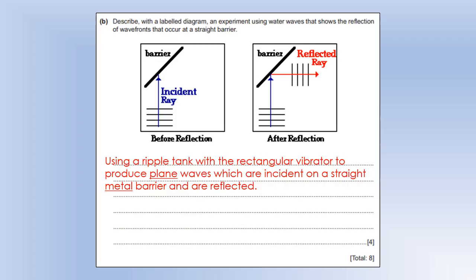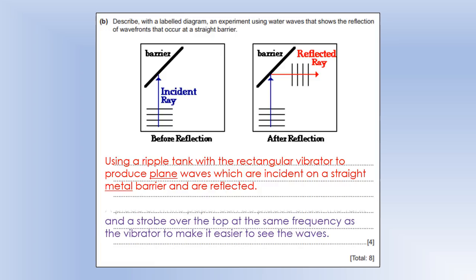And we'll have those incident on a straight, we usually use a metal barrier. We might use a wooden one, I guess, but metal is commonly used. And we can see the reflected waves. So how would we actually see this experiment? Well, we do two things to help us view it. We put a piece of white paper under the ripple tank, which is typically see-through. That helps us see it. And we usually put a strobe light over the top at the same frequency as the vibrator. Both of those things make it easier to observe the wave fronts.